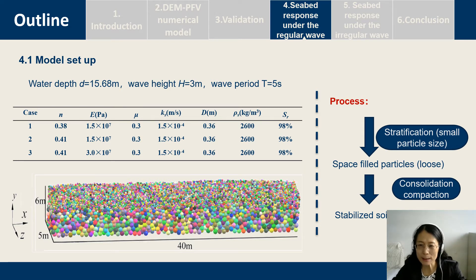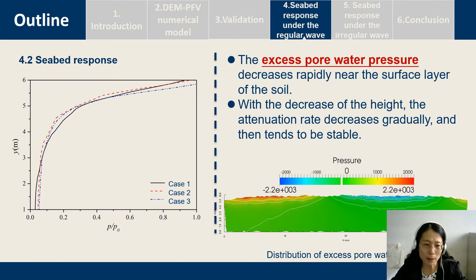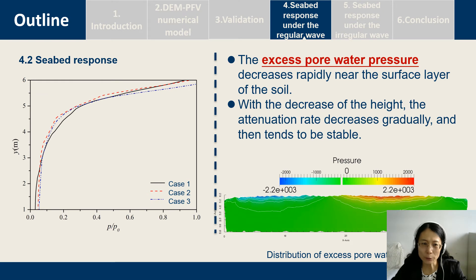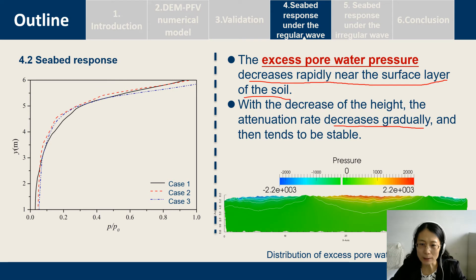With the numerical process, we first apply a stabilization step, and then the standard consolidation process. Then we give the seabed response for the different cases. Here is the distribution of the excess pore water pressure. From this figure, we can see that the pore water pressure decreases rapidly near the surface layer of the seabed. With increasing depth, the attenuation rate decreases gradually and then tends to stabilize.